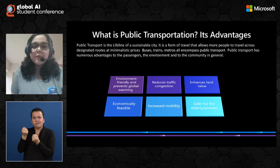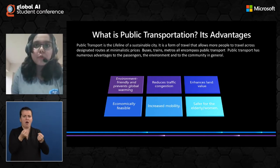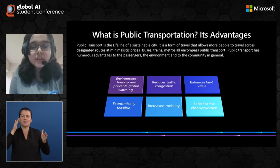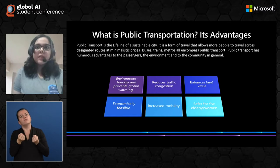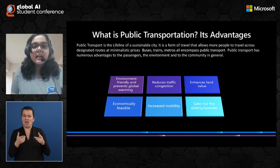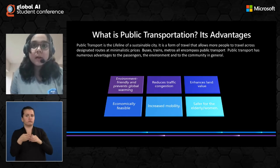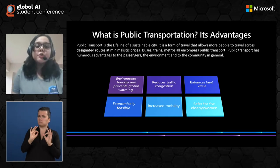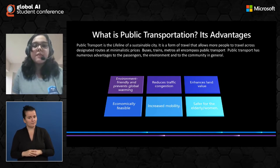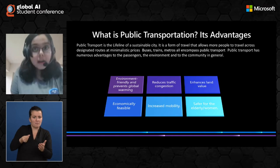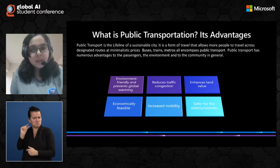This also reduces traffic congestion and increases land value by cutting down the number of private vehicles that could have been used if the bus was not in function. Public transportation facilities like buses and metro services are very economically feasible compared to private vehicles, because you just have to purchase an economically friendly ticket to use the public transportation system.